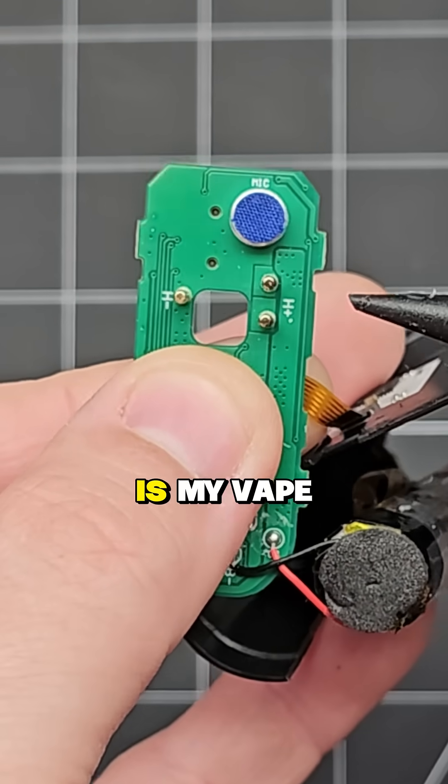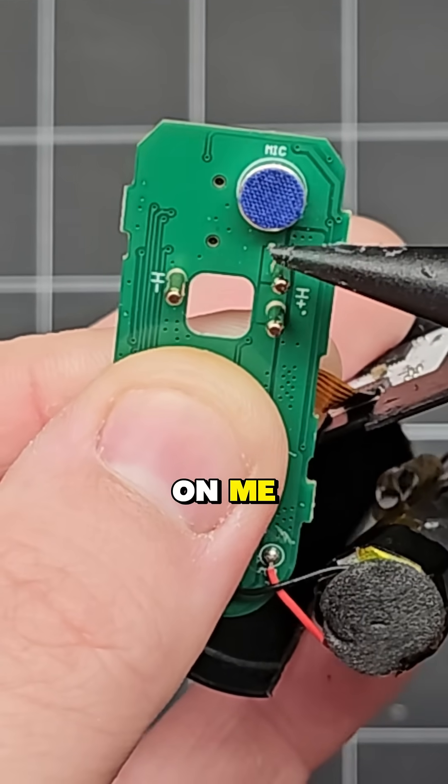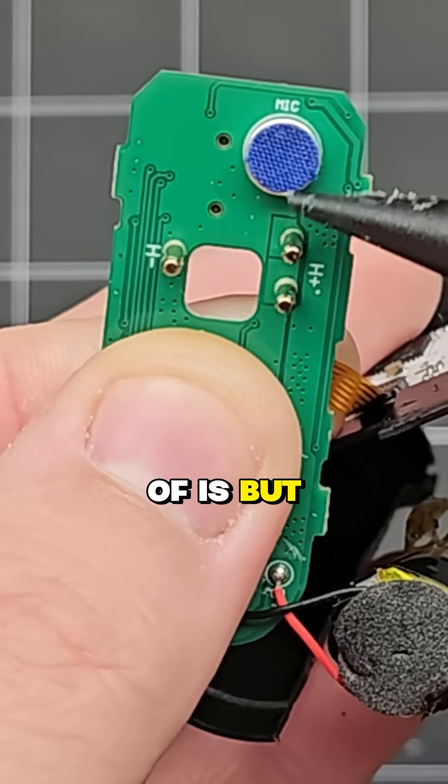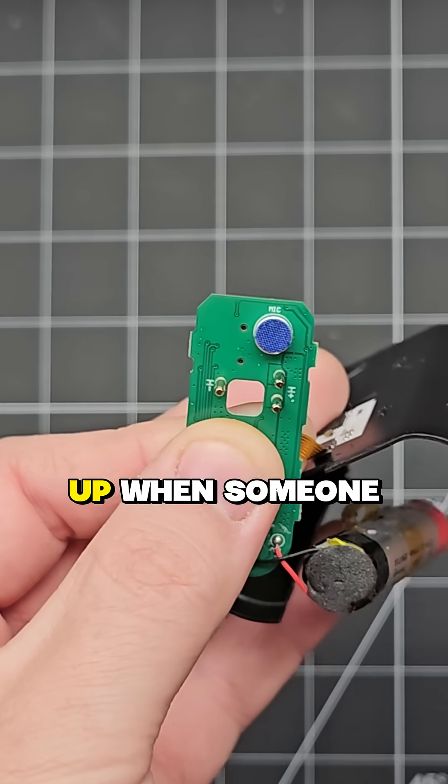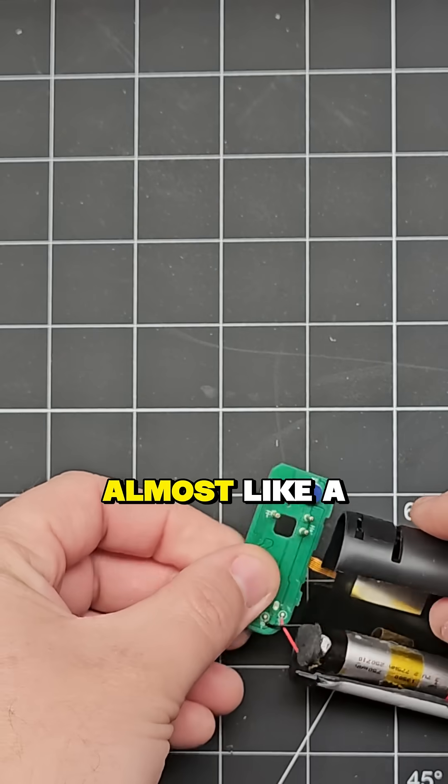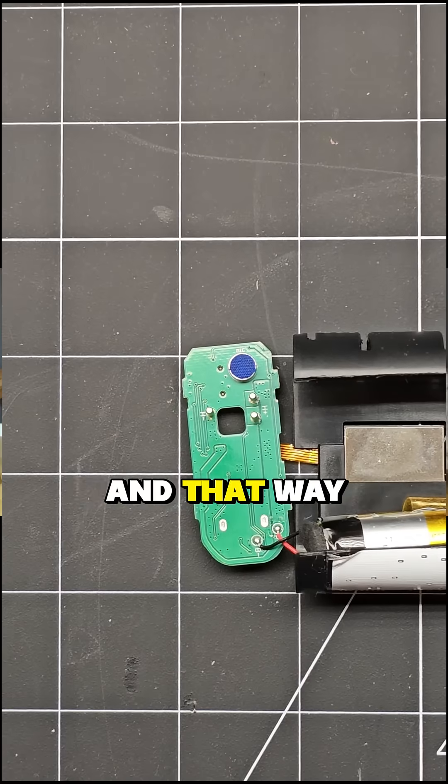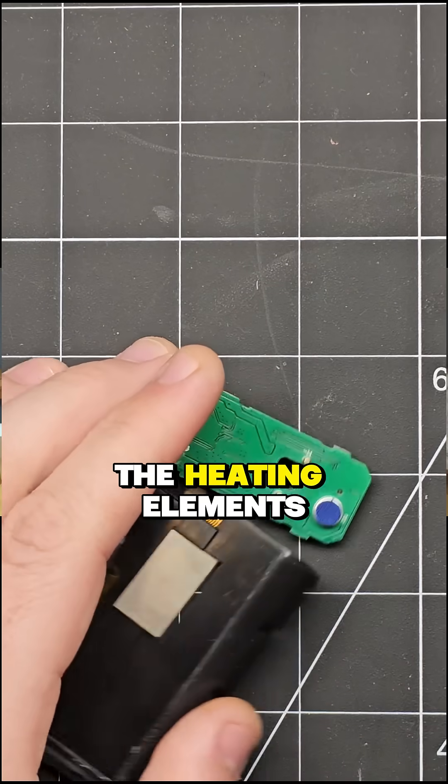Now, you might be wondering, is my vape pen listening in on me? And it kind of is, but not to your conversations. Instead, these microphones are actually used to pick up when someone is inhaling, almost like a pressure sensor, and that way the device knows to turn on the heating elements.